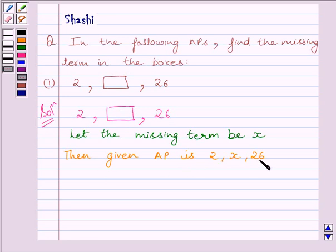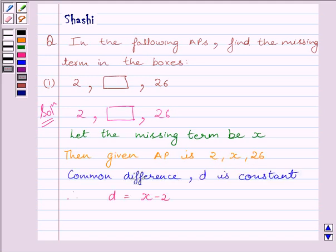Now, we know the difference between the two consecutive terms of AP is constant. So, we get X minus 2 must be equal to 26 minus X. So, we can write common difference D is constant. Therefore, D is equal to X minus 2. Also, D is equal to 26 minus X.